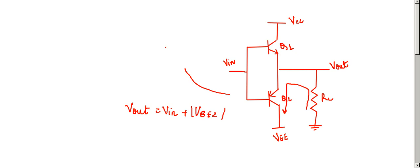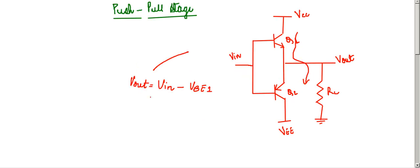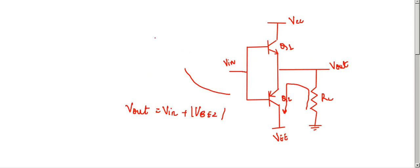Hence we have seen two cases. When VIN was positive, Q1 pushes the current into RL and Q2 was OFF. And again when VIN was negative, Q1 remains OFF due to reverse bias of the base-emitter junction and Q2 was conducting. Q2 pulls the current from RL.